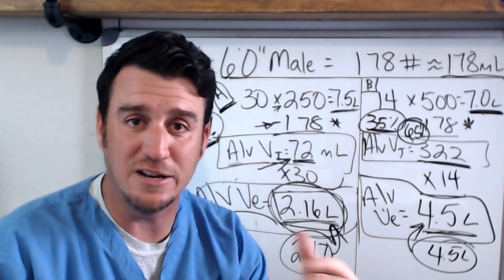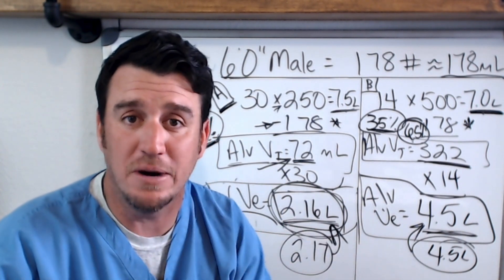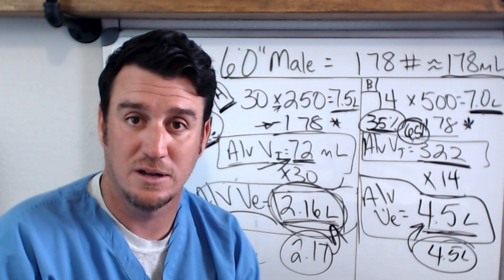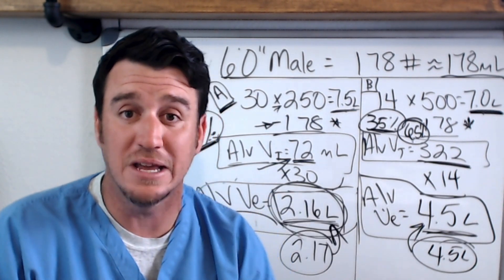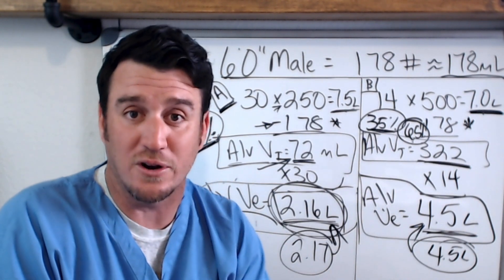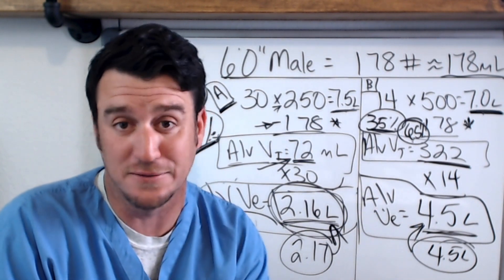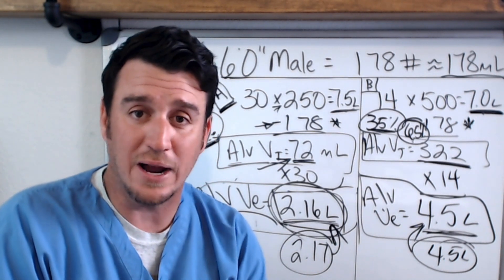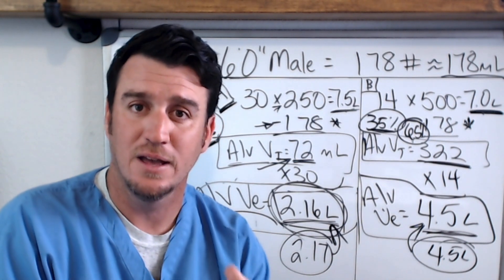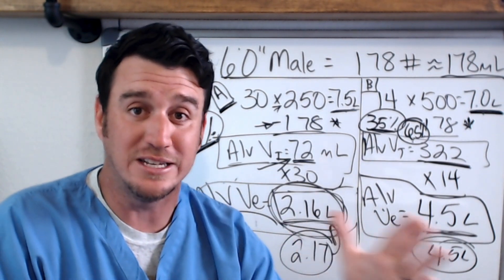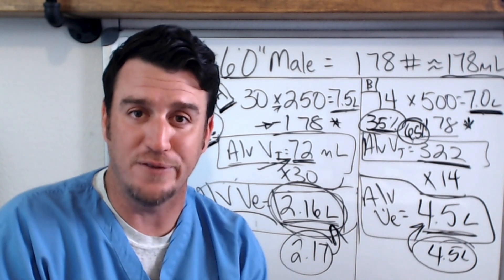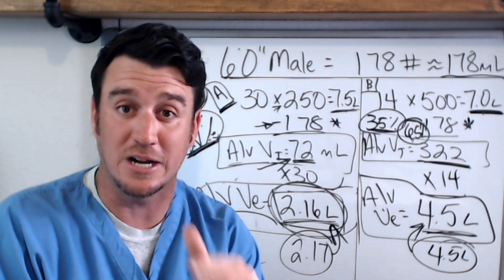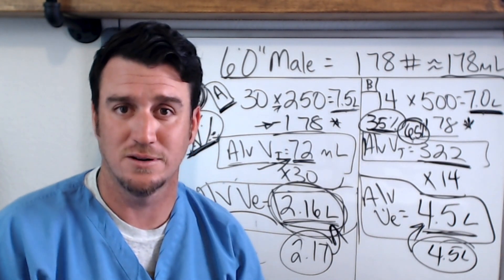The VD/VT ratio tells you what percentage of your tidal volume is ineffective. You can apply that percentage to your minute volume to find out how much of your total minute volume is ineffective — and whatever is left over is your effective ventilation. Normal VD/VT is 20 to 40 percent. Anything greater than that puts you at risk of hypoventilation, because the tidal volume remaining after dead space is not enough to adequately remove CO2.